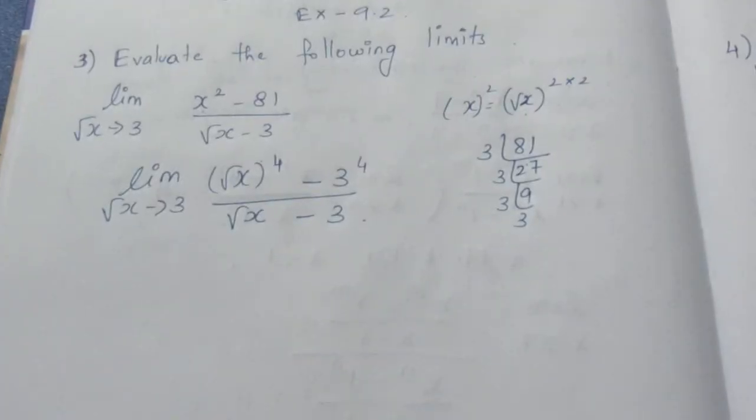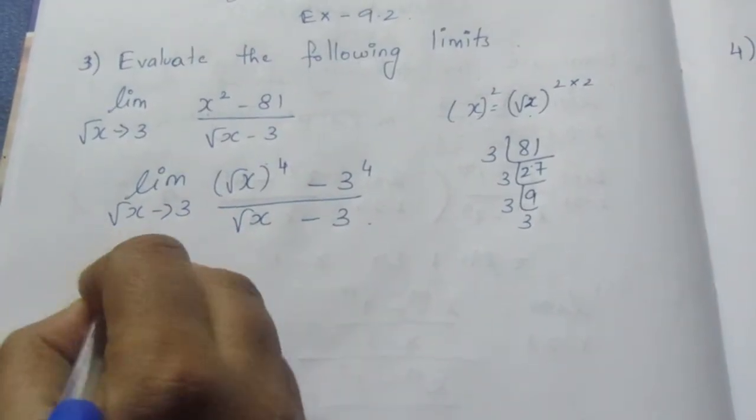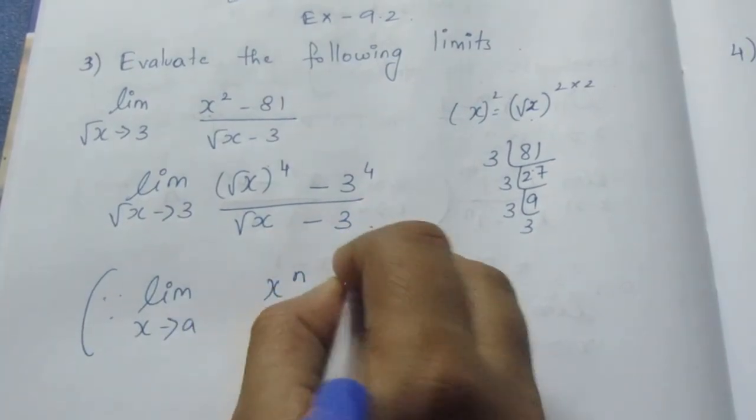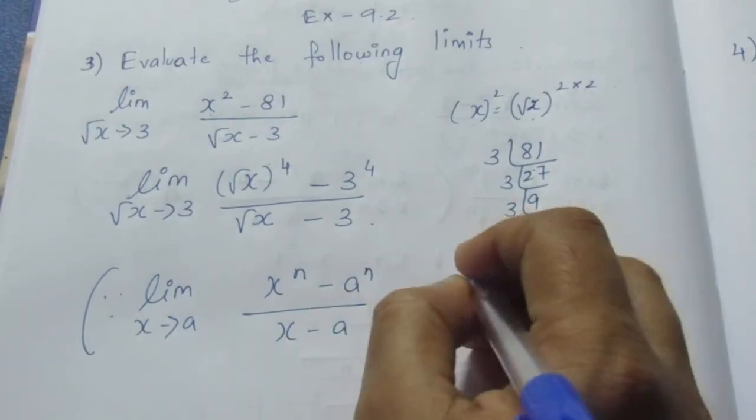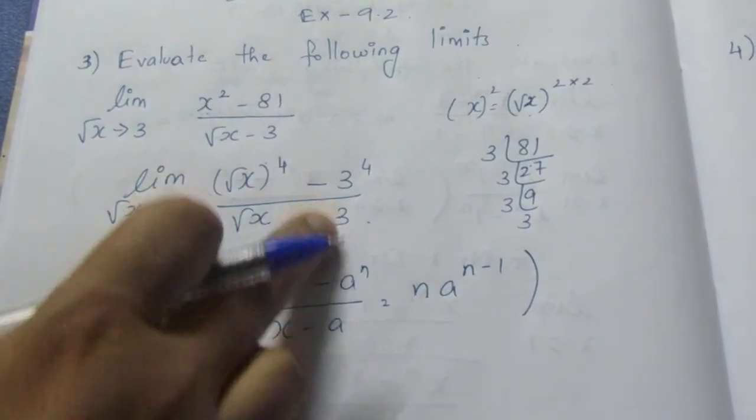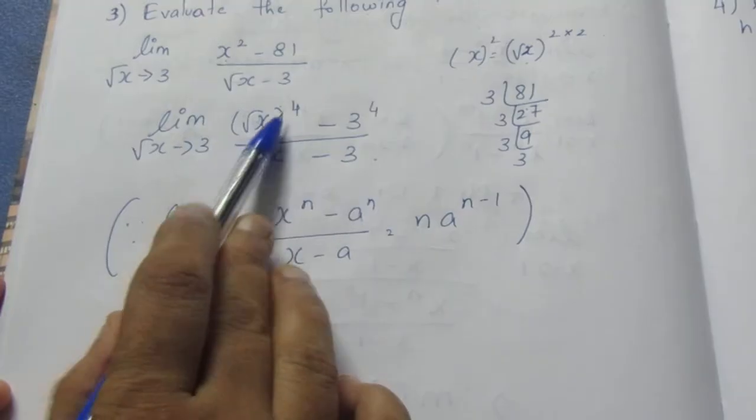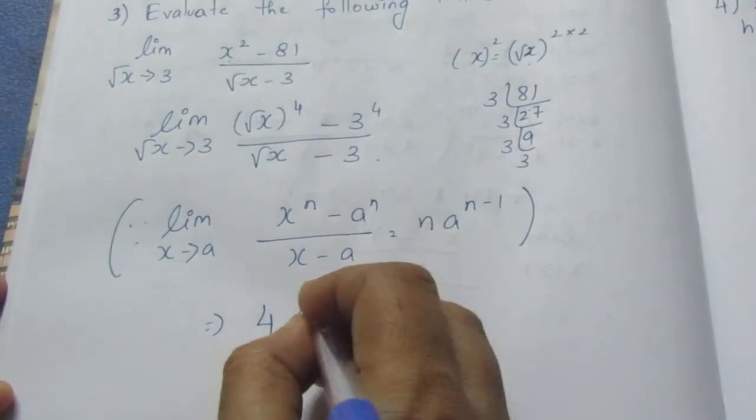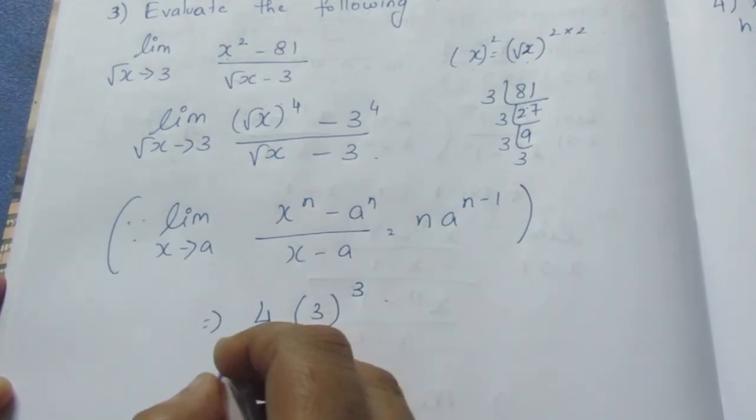Now let's see how we figure it out. Limit x tends to a, x^n minus a^n over x minus a. Now we have number 4, so this is equal to 4. How do we figure it out? n minus 1 is 4 minus 1, which equals 3.